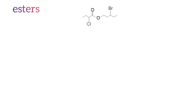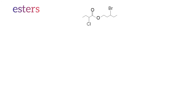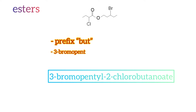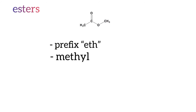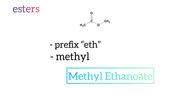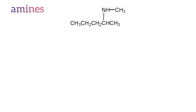Esters: here is an example. Note that there is one main chain which has the alkoxy functional group. There are four carbon atoms in the main chain, therefore the prefix is 'but'. There is another chain bonded to the oxygen atom, therefore the locant will be '3-bromopentyl'. The '-oate' ending is used, giving the name 3-bromopentyl 2-chlorobutanoate. Here is another example: there are two carbon atoms in the main chain, so the prefix is 'eth'. There is one methyl group attached to the oxygen atom, so the name starts with 'methyl', giving methyl ethanoate. The name ends with '-oate' because it is an ester.